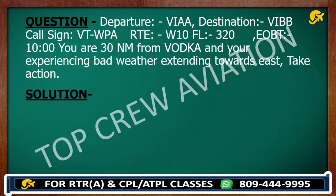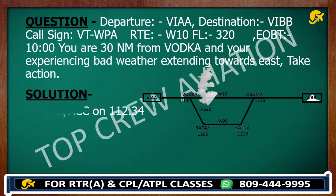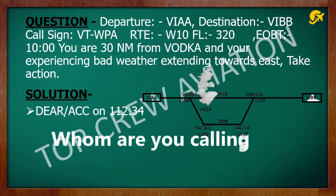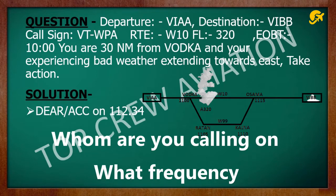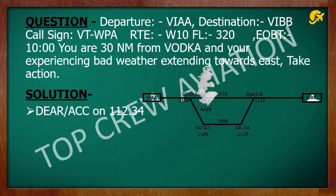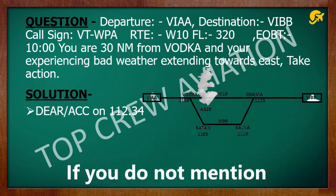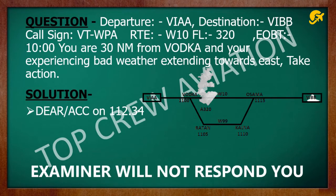Let's make a call. Your control is ATC control — it could be Delhi, Ahmedabad, whatever it is as per the route. You have to mention the frequency. It is very important: whom are you calling, on what frequency? Let's say our control is on 112.34. If you do not mention frequency, sometimes the examiner will not respond to you. If you waste 5 minutes, you are gone in the RT exam.